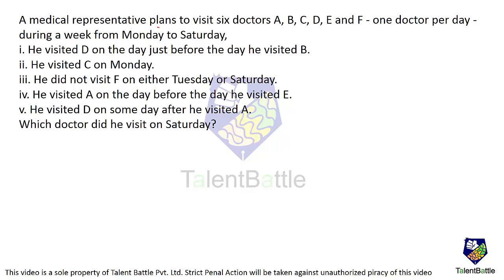A medical representative plans to visit six doctors A, B, C, D, E, and F — one doctor per day during a week from Monday to Saturday. He visited D on the day just before the day he visited B, so D comes just before B. He visited C on Monday, that is the first day. He did not visit F either on Tuesday or Saturday, so F cannot be on Tuesday or Saturday. F can be between Wednesday, Thursday, and Friday.